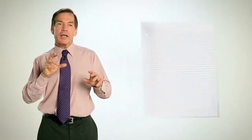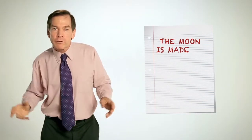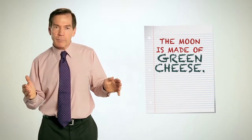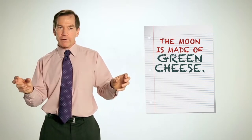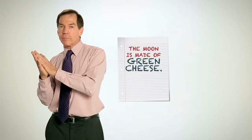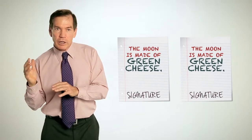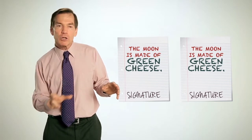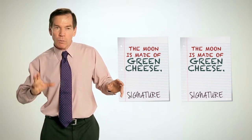And the key is that the issuing bank doesn't care what those documents say. Those documents could say, the moon is made of green cheese. The issuing bank simply will take the drawdown documents when the time comes, the beneficiary shows up with the documents signed, and the issuing bank will make sure that they match the original agreement that was agreed to.